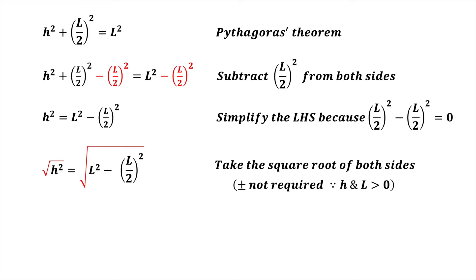Note that the plus or minus symbol is not required here because h and L are greater than zero as they are lengths. Now simplify the left-hand side because the square root of h squared equals h.